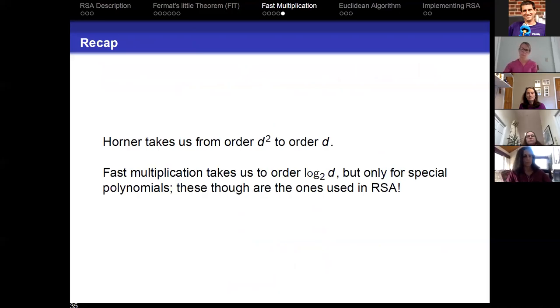So again, just to recap, Horner's algorithm takes us from order d squared to order d. And then fast multiplication takes us down to order log of d base 2. And this is one of the big things in applied mathematics. It's not enough to be able to do something. You have to be able to do something efficiently. If it takes too long, if the universe is going to die, if you need every subatomic particle of the universe to be a universe itself of supercomputers devoted exclusively to you, you're out of luck. So I'm going to stop this part over here and then move to the next unit.